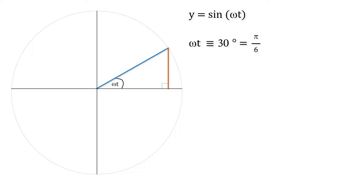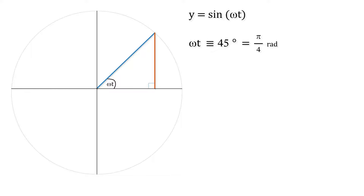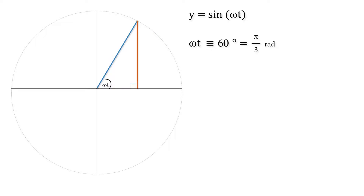With y equals sine omega t, when omega t is equivalent to 30 degrees or pi over 6 radians, the sine of that is 50% or 0.5, so the opposite side is half as long as the hypotenuse. At 45 degrees or pi over 4 radians, the sine is equal to 71% or 0.71, so the opposite side is 71% as long as the hypotenuse — and that's true no matter how long the hypotenuse is.